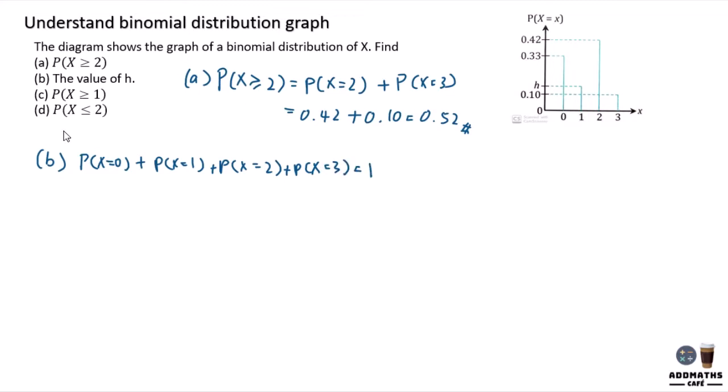it will give you 1. So in this case, you know that your 0 will be 0.33, your 1, which is h, plus your 2, 0.42, plus your 3, which is 0.1, and equal to 1. So your h will then be 1 minus all this value, giving you a h value of 0.15.